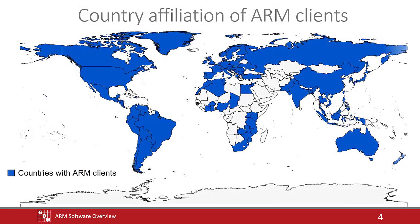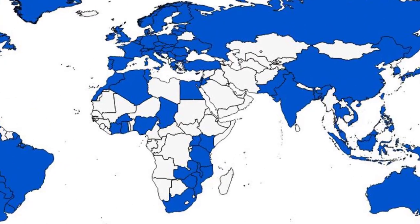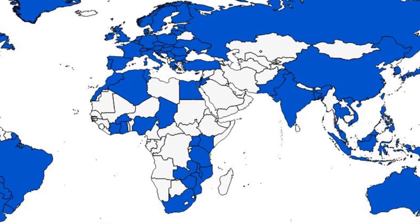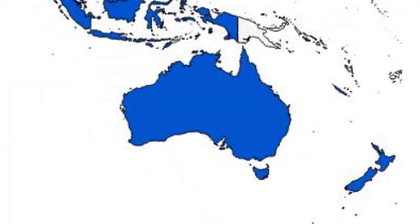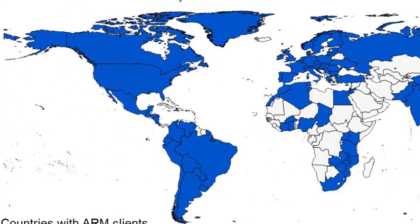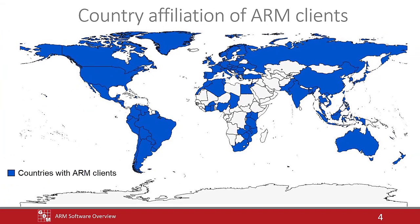Thousands of researchers use ARM in nearly 100 countries across the world. GDM representatives offer local support in Europe, Africa, Asia, Australia, and North and South America. Used by the largest global agrochemical companies, ARM is the recognized and respected standard throughout the crop production and protection industry.